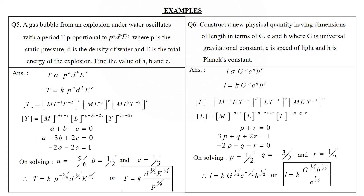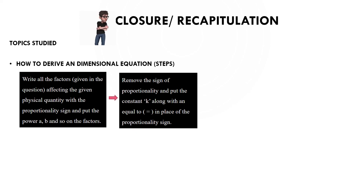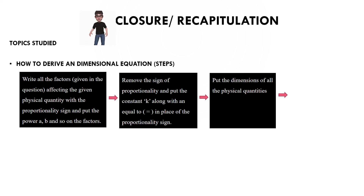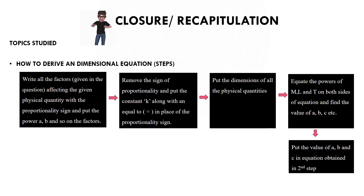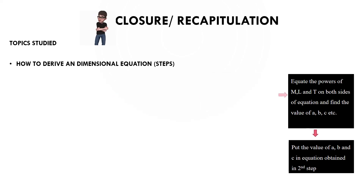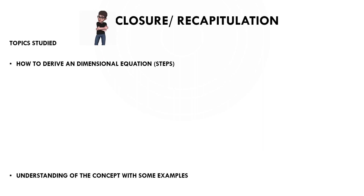Let's quickly recap today's session on how to derive a dimensional equation. Step 1: write all factors with proportionality sign and powers a, b, c. Step 2: remove proportionality sign, put constant k. Step 3: substitute dimensions of all quantities. Step 4: equate powers on both sides to find a, b, c. Step 5: put values back to obtain the final equation.